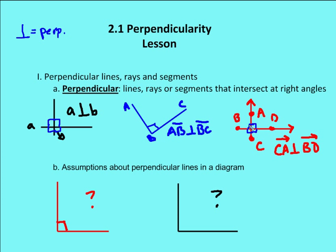What kind of assumptions can we make about perpendicular lines in a diagram? Well, if I'm given that A is perpendicular to B, then I know the lines intersect at right angles and are 90 degrees by definition. But if I'm not given that information, in a diagram, if there is a box in the corner representing the angle, then I can say the two segments intersect at right angles. If there isn't a box or a symbol indicating two perpendicular lines or a right angle, then you cannot assume from the diagram that the two segments intersect at a right angle and are perpendicular to each other.